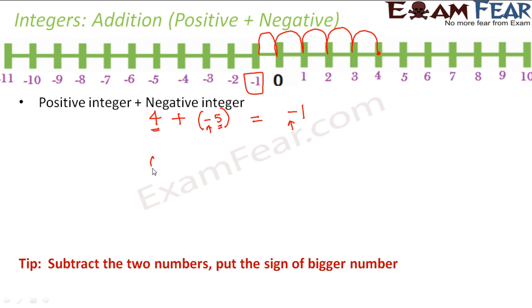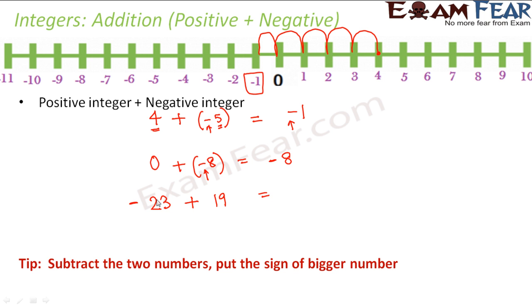Let's say 0 plus minus 8. Find the difference: 8 minus 0 is 8. The bigger number is 8 which carries a negative sign, so the result is minus 8. Another example: minus 23 plus 19. Find 23 minus 19, which is 4. The bigger number is 23 and it carries a negative sign, so the result is minus 4. Without drawing the number line, you can find the sum.